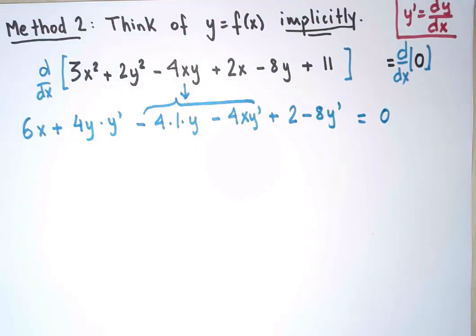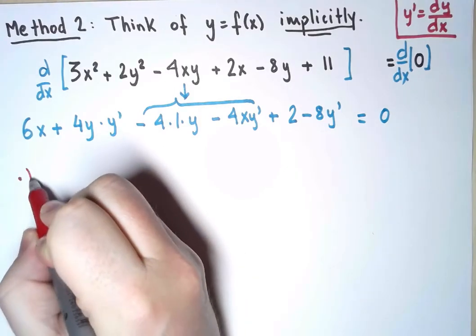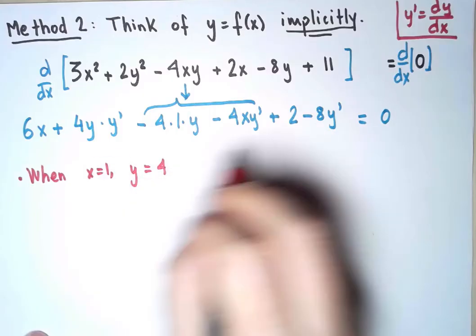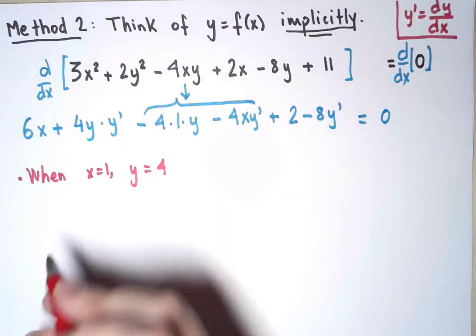And there, I have now a relation between x, y, and y', which is true at all points of the curve, all of them. But I only care about one point of the curve. I only care about what happens when x equals 1 and y equals 4. So, I can now plug those in here, and let's see what I get.